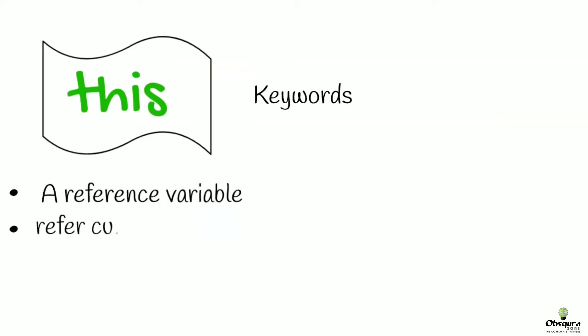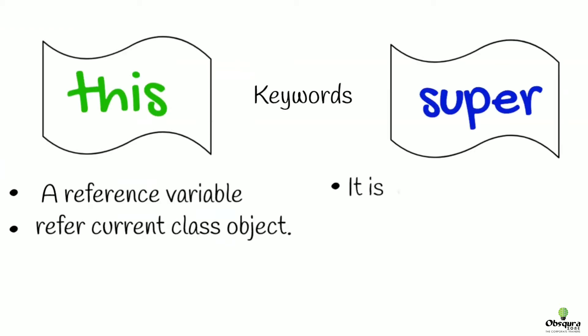The this keyword is a reference variable that is used to refer to a current class object.